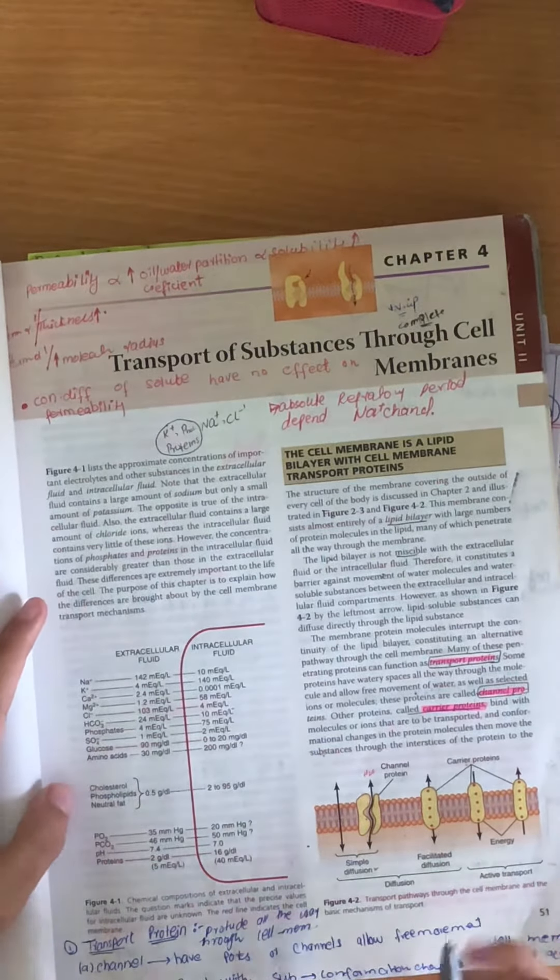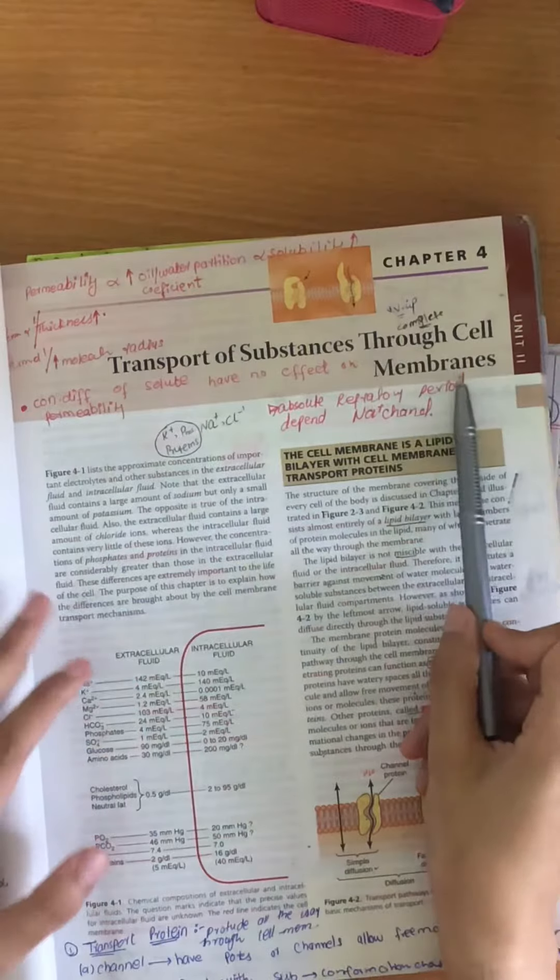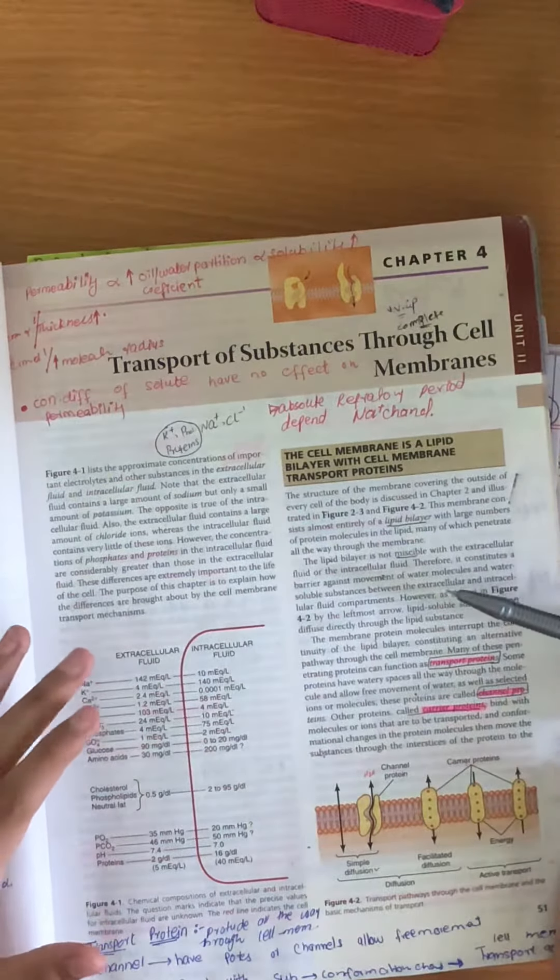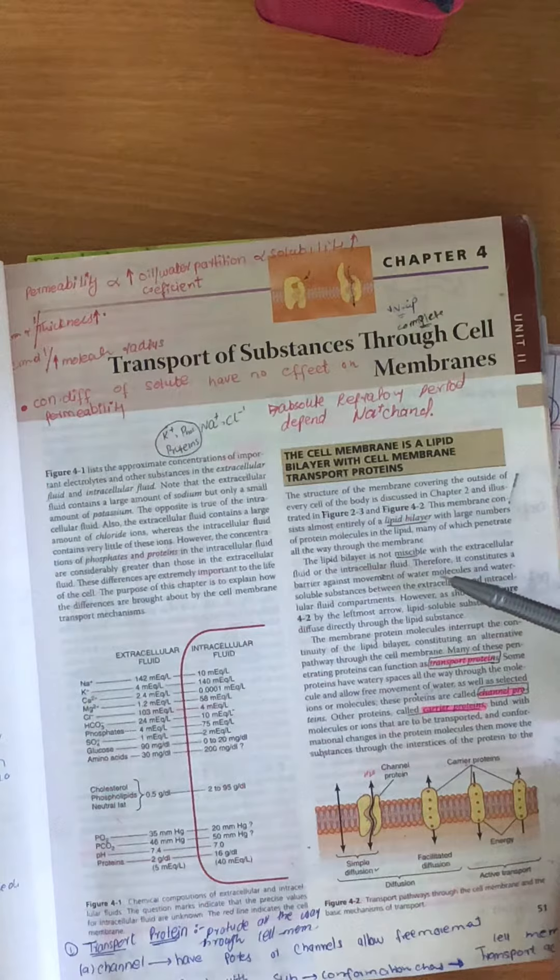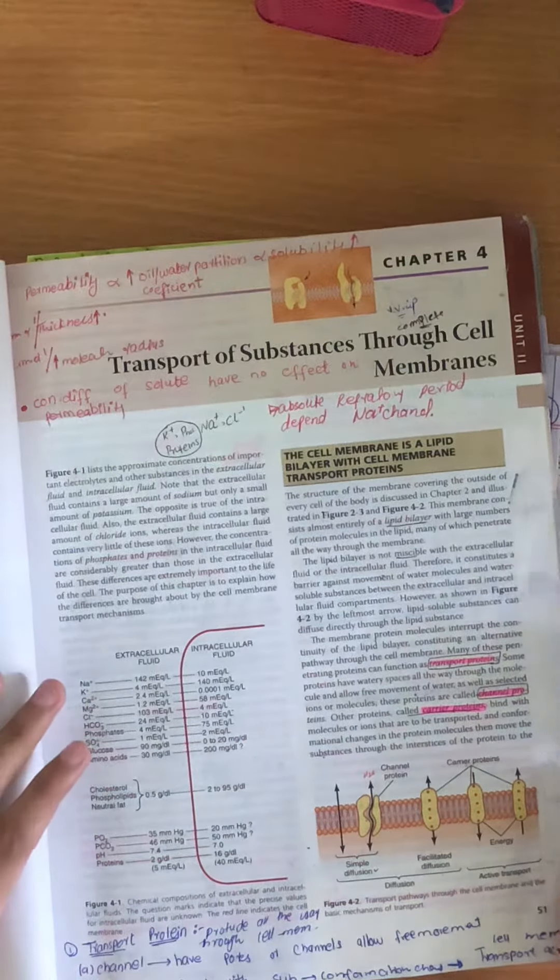Now we are going to do the guide for chapter number 4, Transport of Substances Through Cell Membranes. I will tell you those things that can come in MCQs, Vivas and SAQs, and those things that are not important.